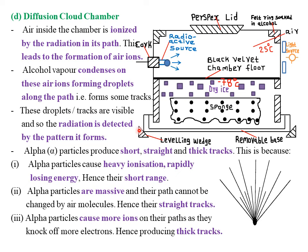The fourth type of radiation detector is called the diffusion cloud chamber. It consists of two compartments: the lower compartment and the upper compartment. The lower compartment consists of a leveling wedge and a removable base. It also consists of a sponge whose function is simply to hold the dry ice in position so that it can perform its functions effectively.